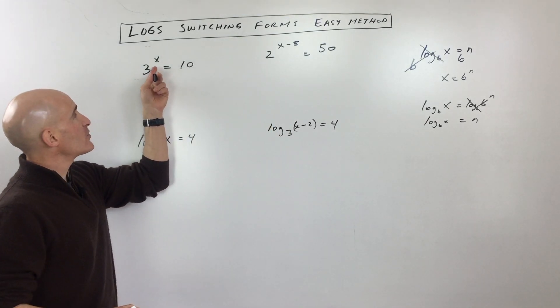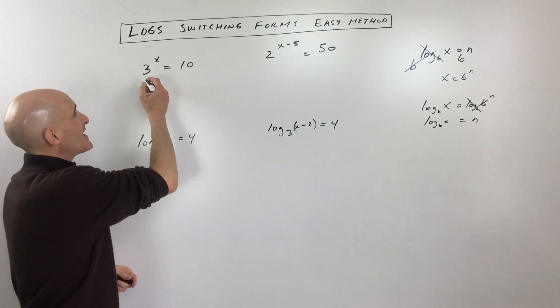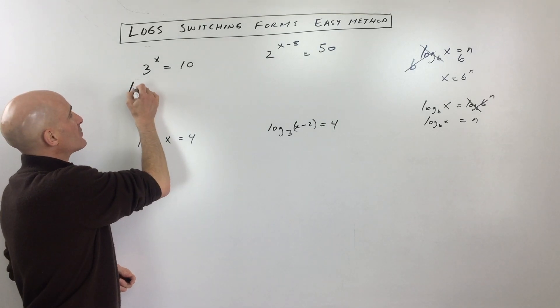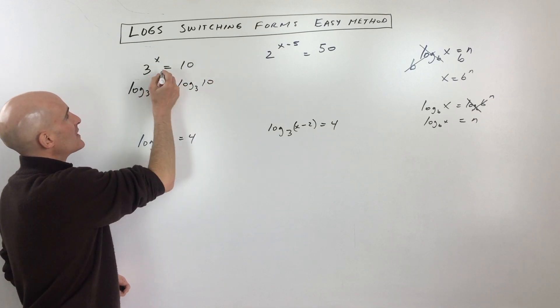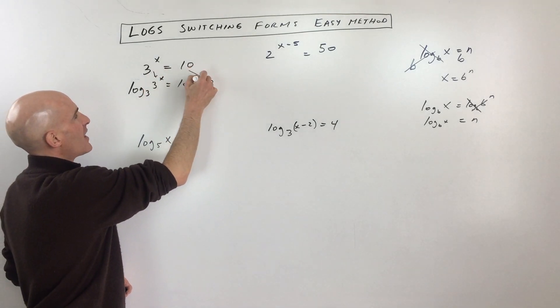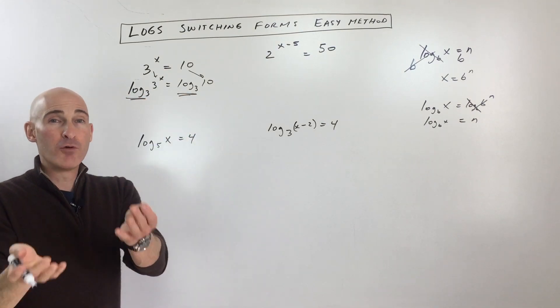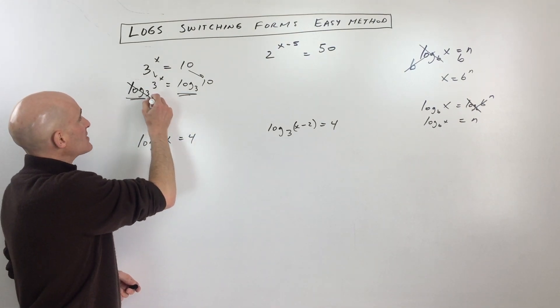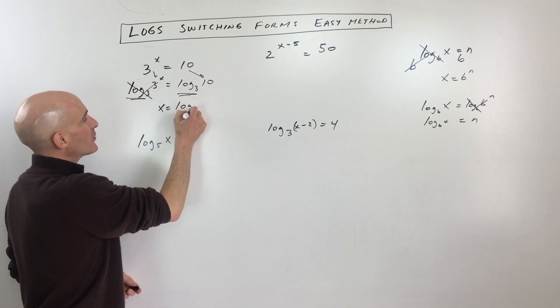This first one, 3 to the x equals 10, we want to solve for our variable x. So instead of exponentiating, what we're going to do is take the log base 3 of both sides of this equation. So what I did, as you can see, I just brought this 3 to the x down and the 10 down, but what I did is I took the log base 3 of both sides because log base 3 and exponential base 3, those are inverses, they undo one another and now you've got your variable x by itself.